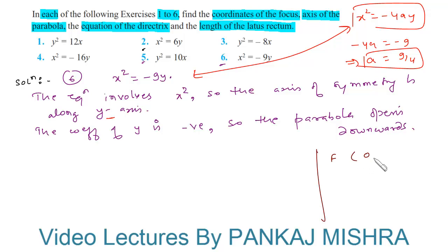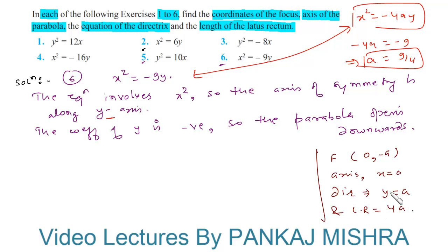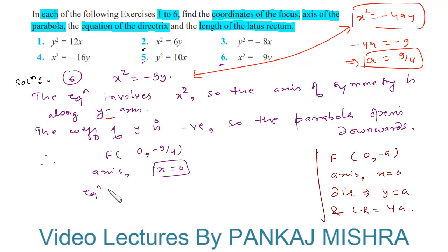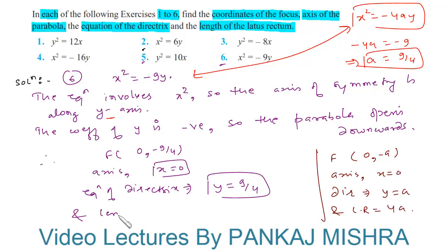For such a parabola, the focus is at (0, −a), the axis is x = 0, the equation of the directrix is y = a, and the length of the latus rectum is 4a. Therefore, the focus is at (0, −9/4), the axis is x = 0, the equation of the directrix is y = 9/4, and the length of the latus rectum is 4 × (9/4) = 9.